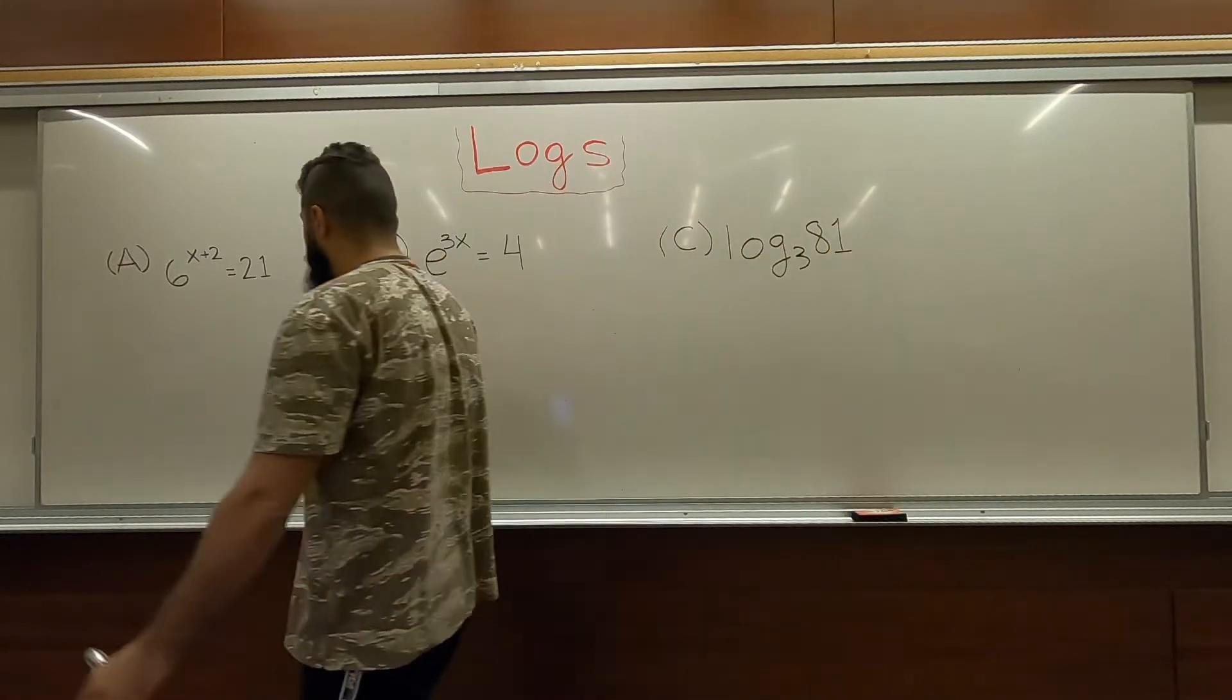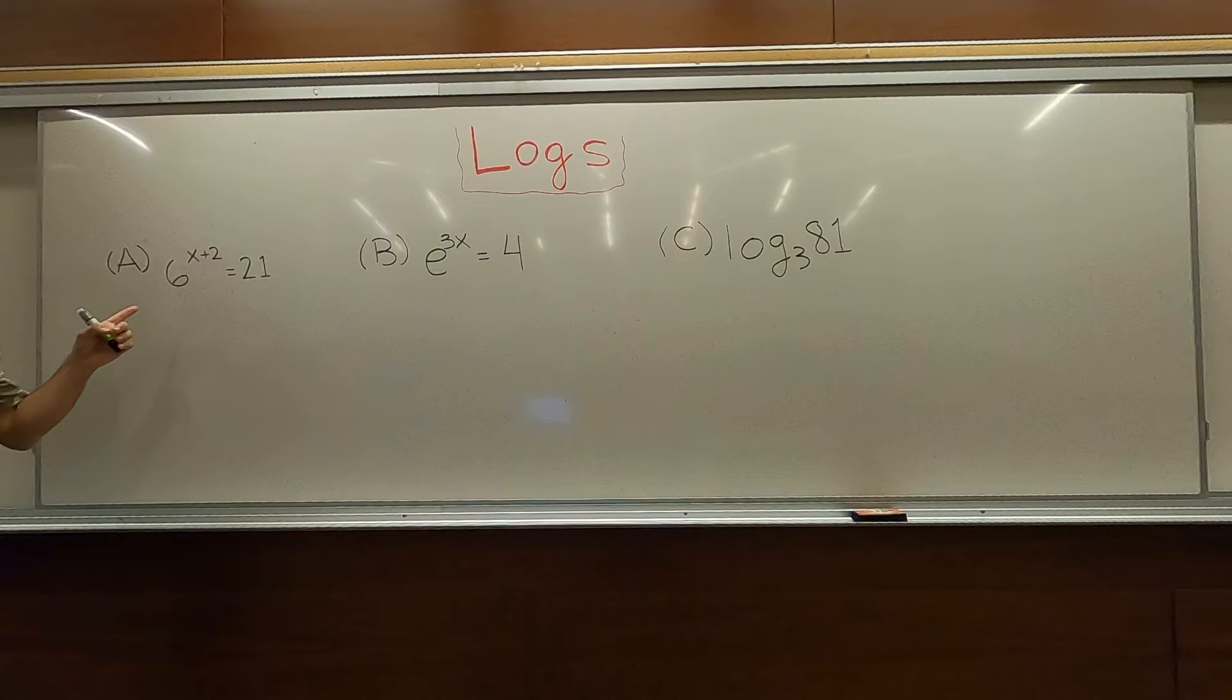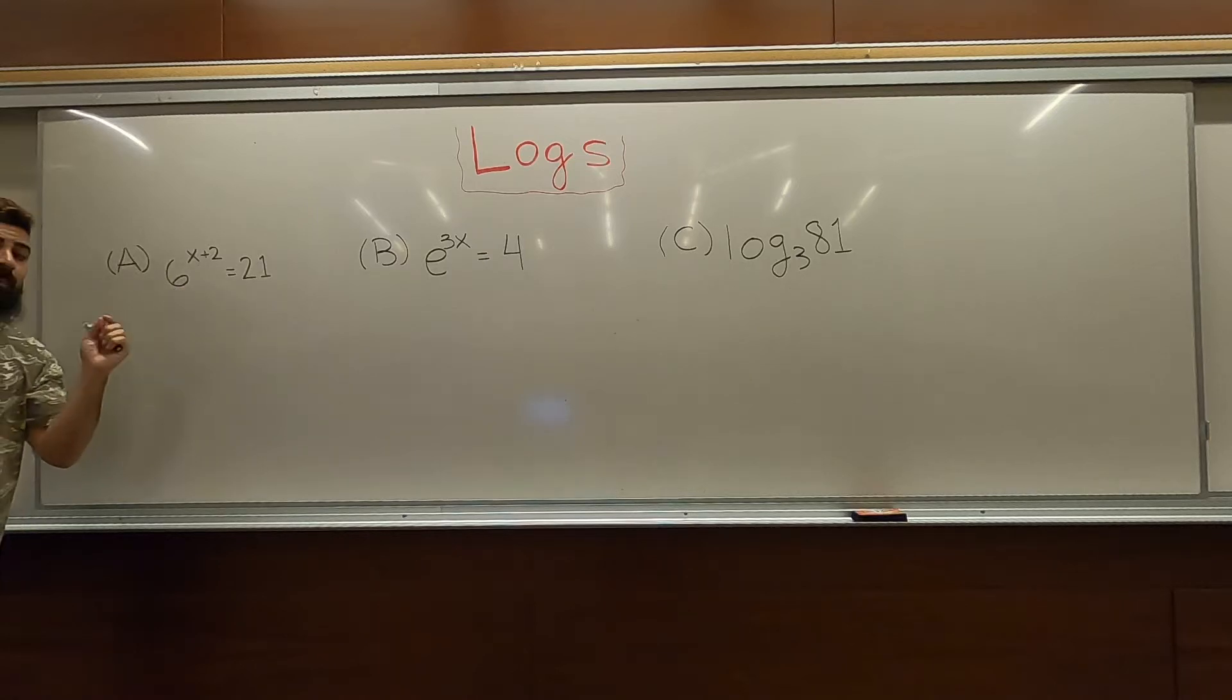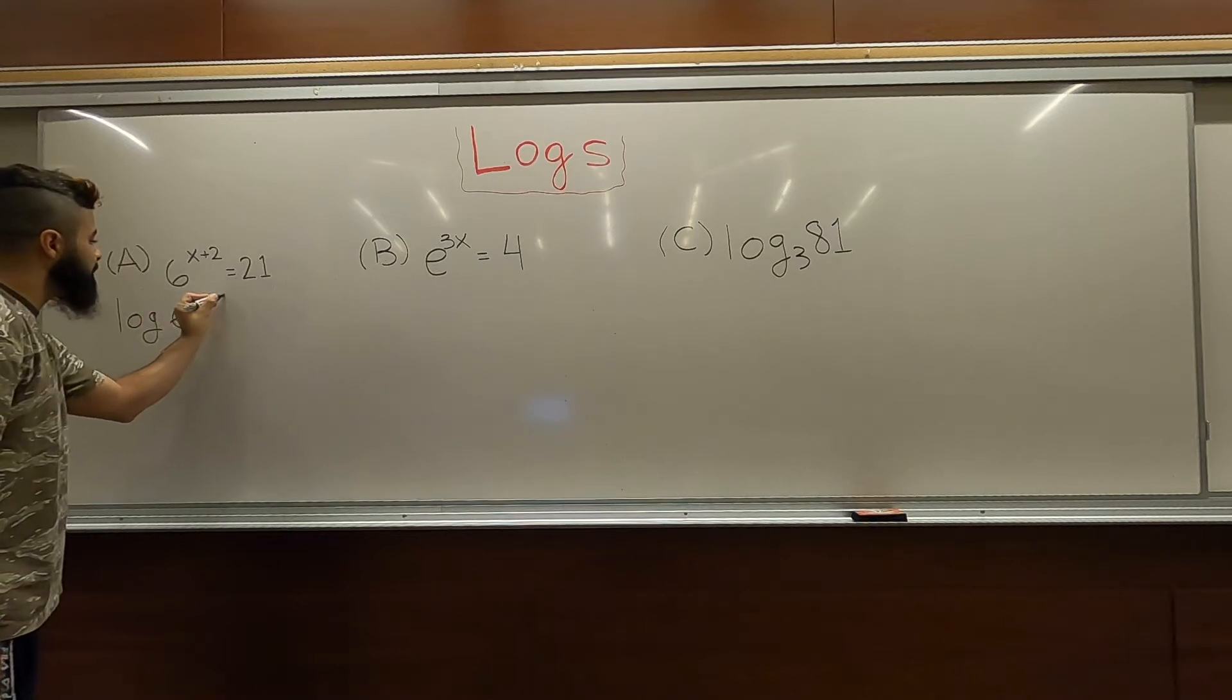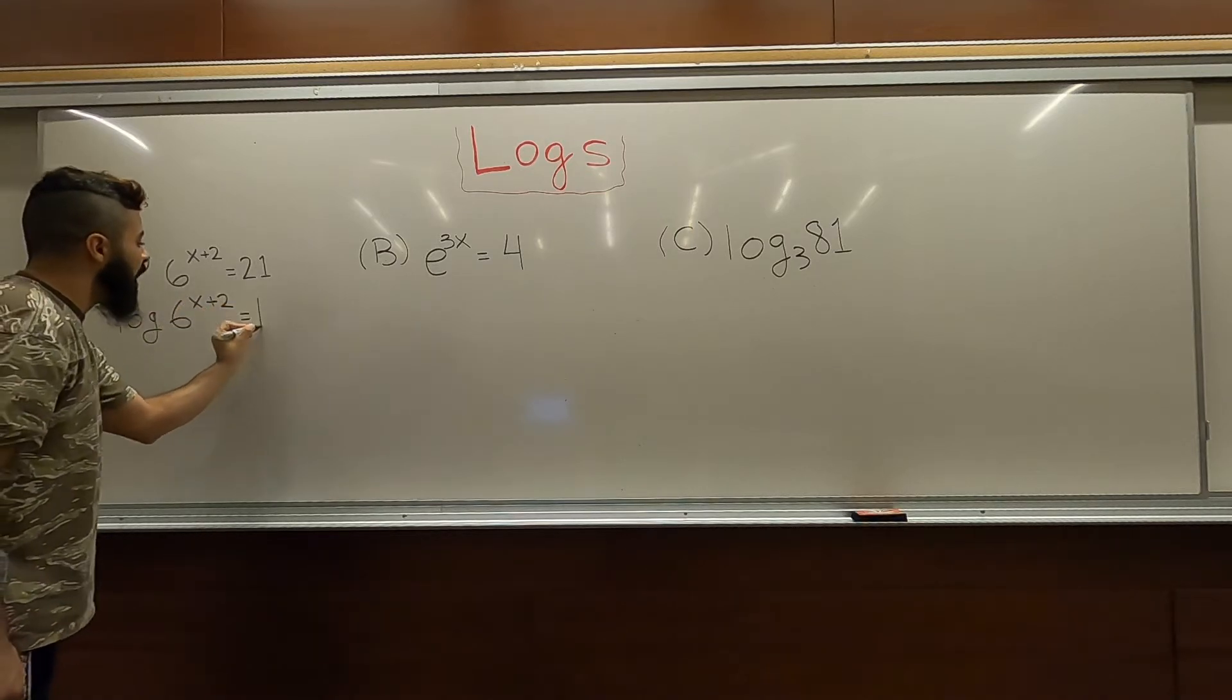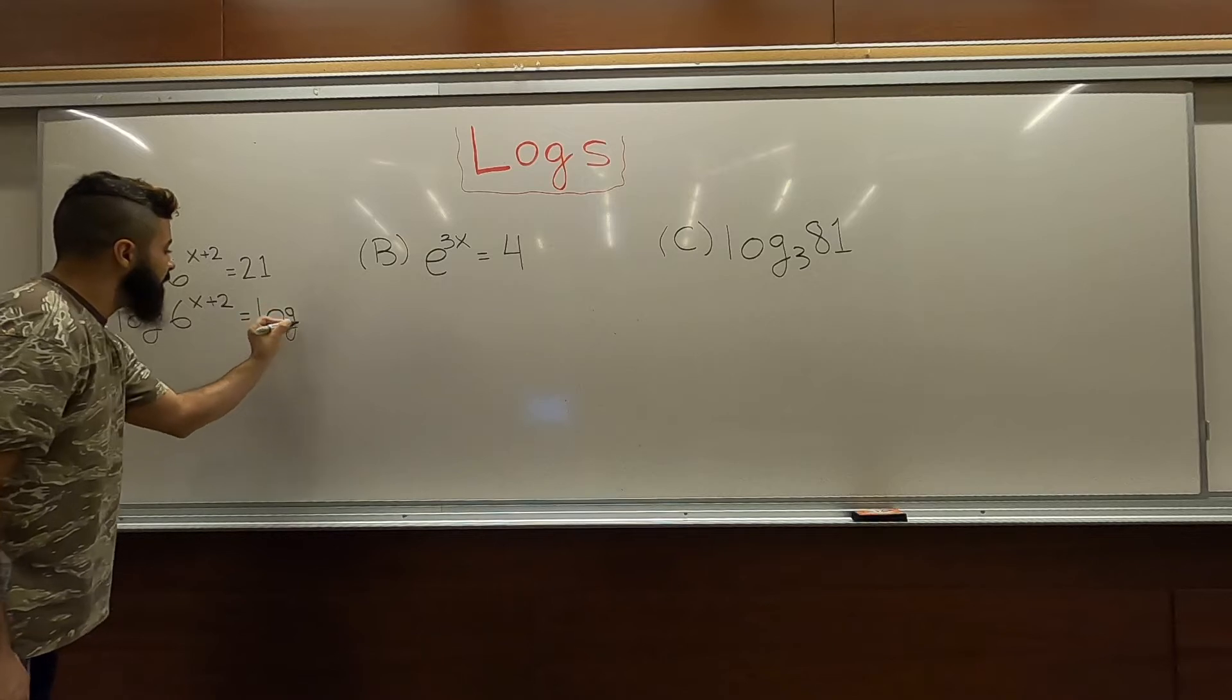First things first. When you're given an exponential, such as the first one in example a, 6 raised to the x plus 2 equals 21, the common trick here is to take a log of both sides. So, we get log of 6 to the x plus 2 is equal to log of 21.